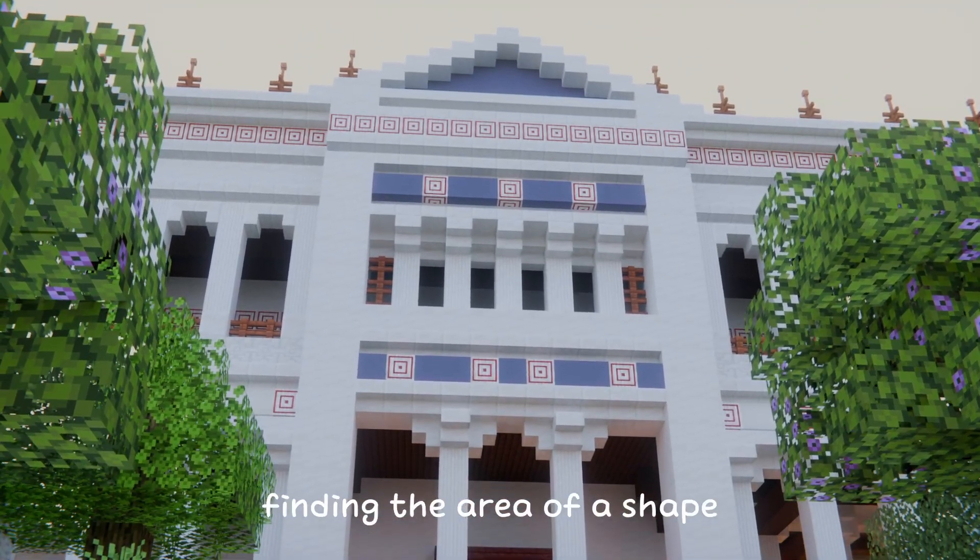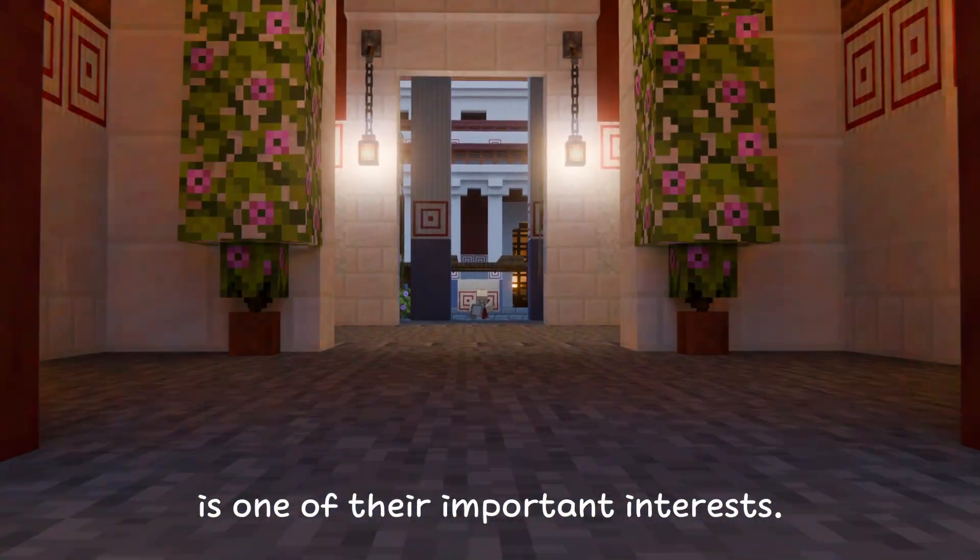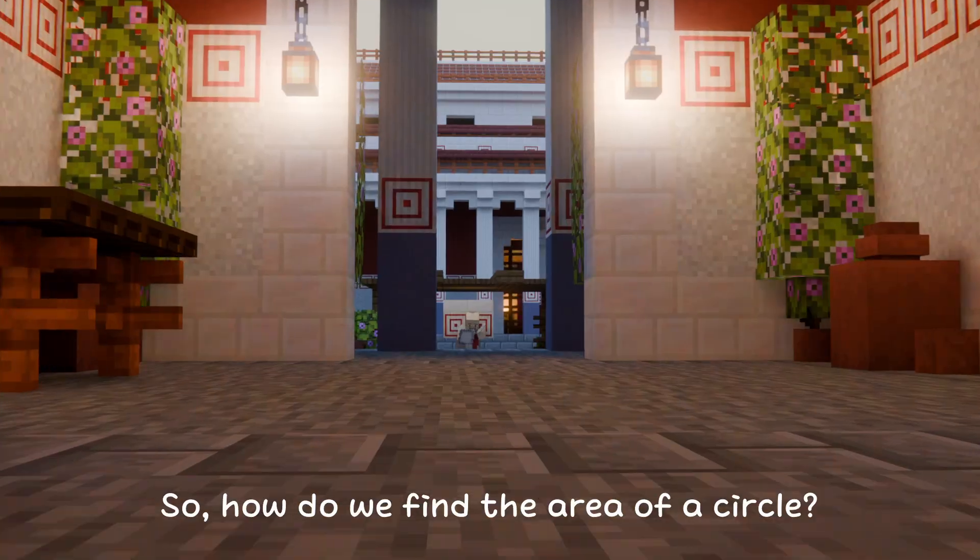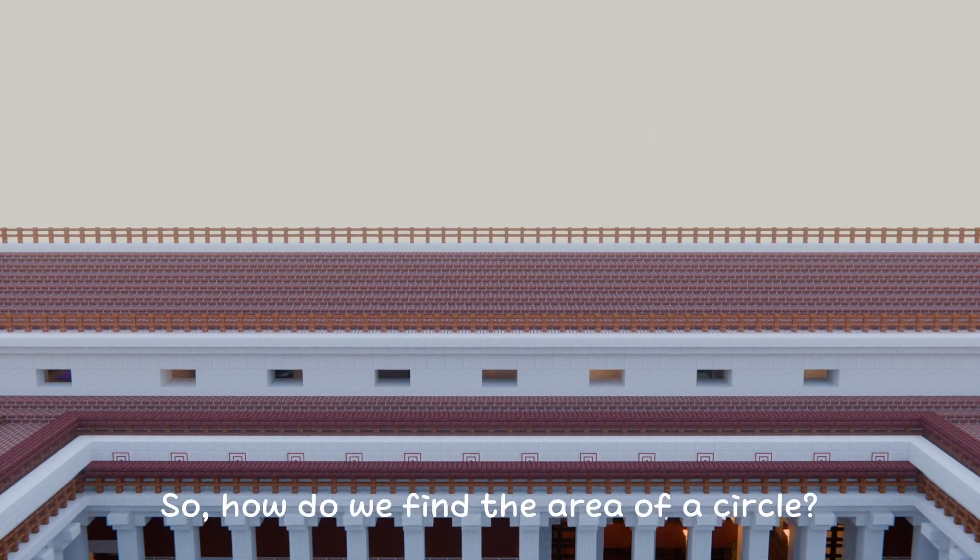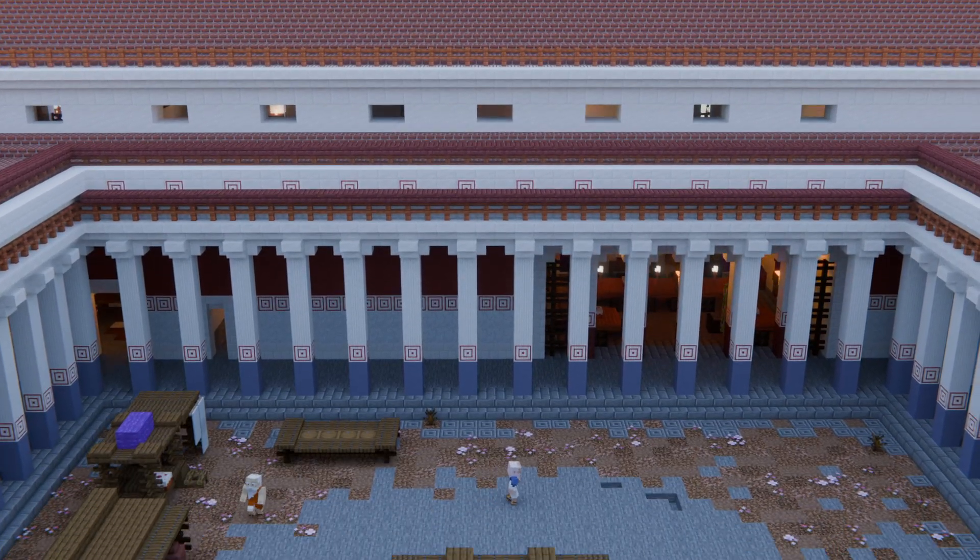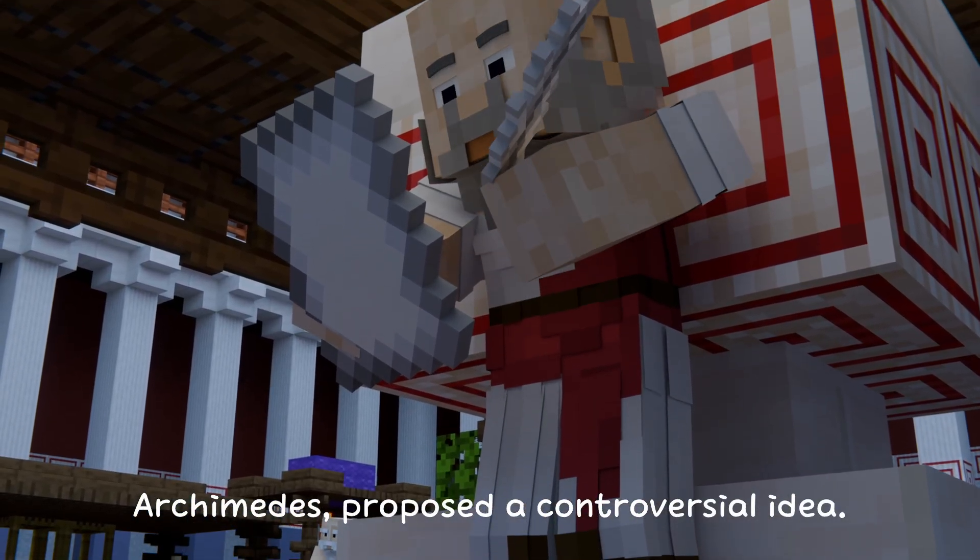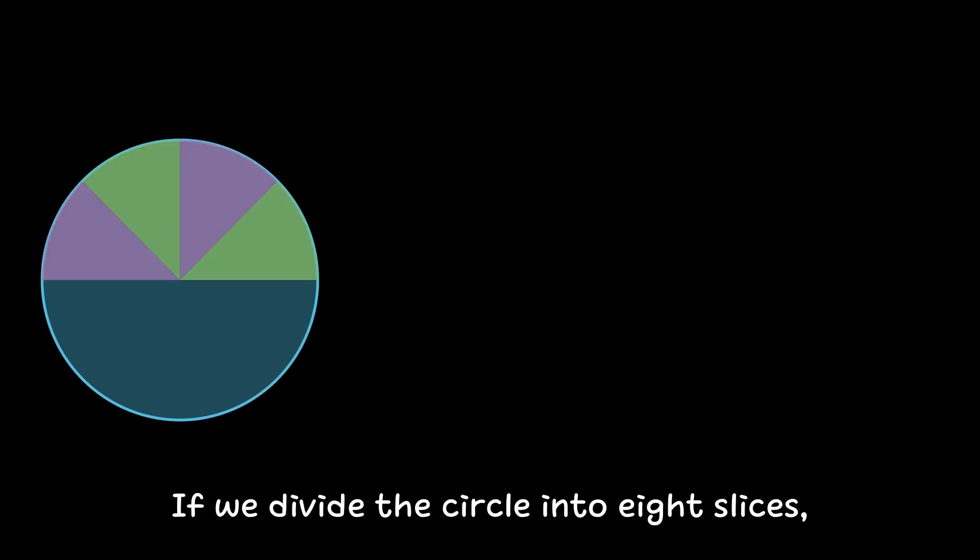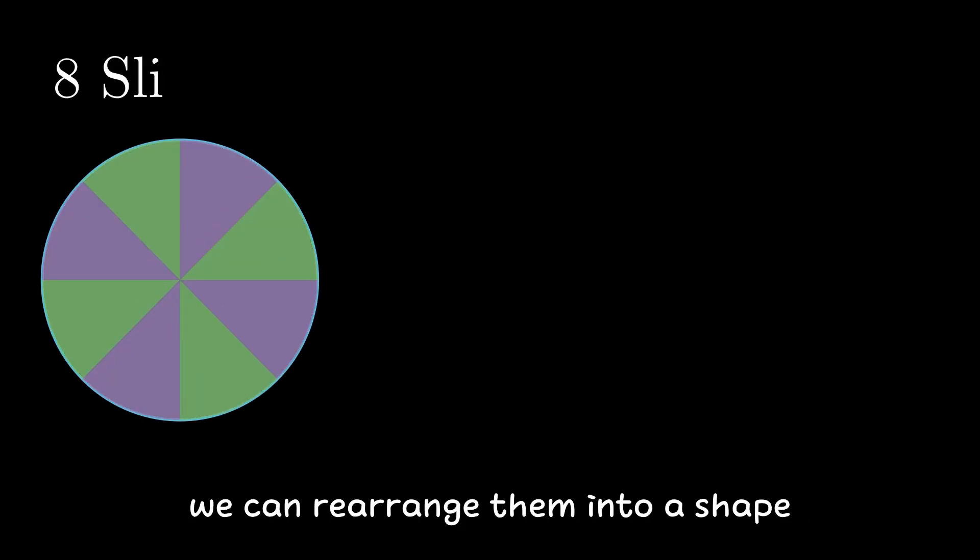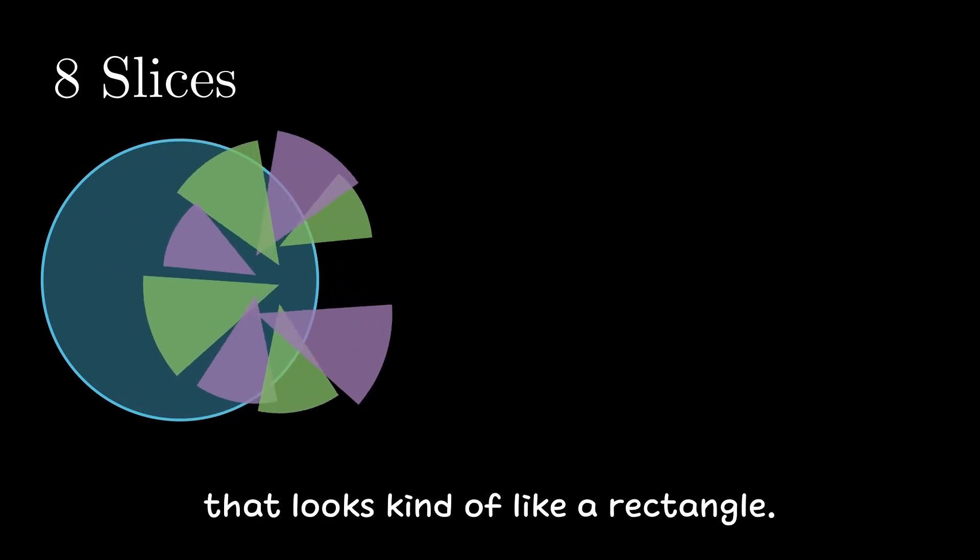Because of this, finding the area of a shape is one of their important interests. So, how do we find the area of a circle? At the time, one mathematician, Archimedes, proposed a controversial idea. If we divide the circle into 8 slices, we can rearrange them into a shape that looks kind of like a rectangle.